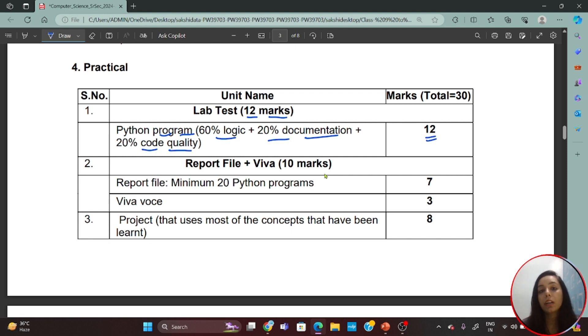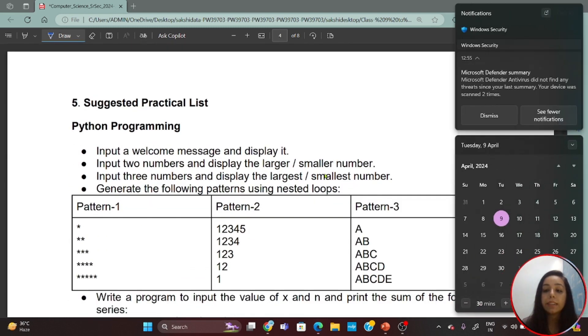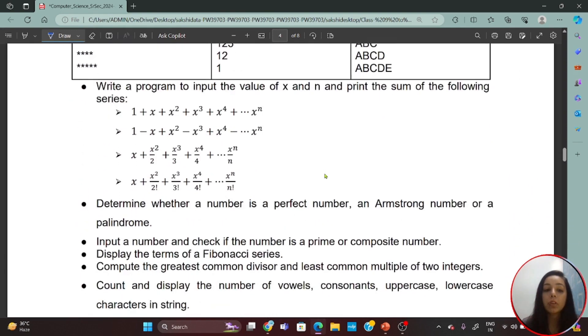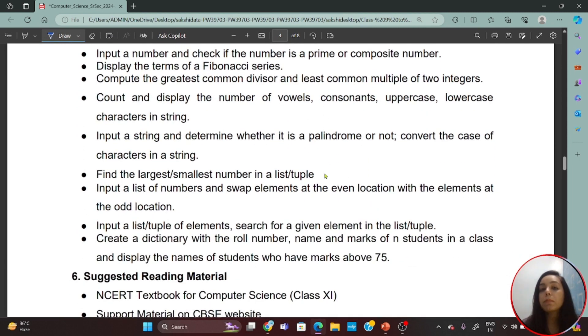In addition, there is the practical file and the project file. Same as you have in Class 12. The practical file should have minimum 20 Python programs, which will cover 7 marks. And whatever you study in the syllabus, Viva Voce is 3 marks. The project that uses most of the concepts that have been learned is assigned by teachers to a group of 2 to 3 students, and that will be 8 marks. Now the 20 Python programs that you will write, CBSE has a suggested practical list for you. The topics you study, such as input a welcome message and display it, input two numbers and display the larger and smaller number. So on the basis of the topics you study in chapters, there is a list of programs. You can take these programs. Minimum 20, you can make 25 to 30, as many programs as suggested by your teacher.